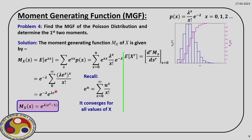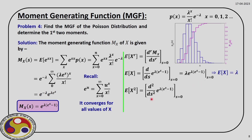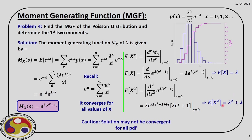To find the moments, we differentiate the MGF and put s equal to 0. The first moment is the first differential of the MGF at s=0, giving λ. Similarly, the second moment is the second differential at s=0, which gives λ² + λ. Note that convergence is not always guaranteed, so we must keep that in mind. From these two moments we can also find the variance and standard deviation.